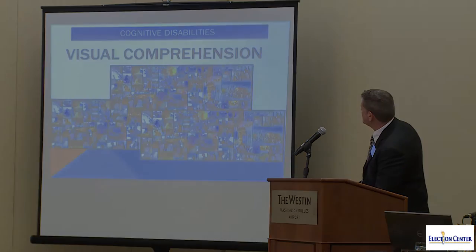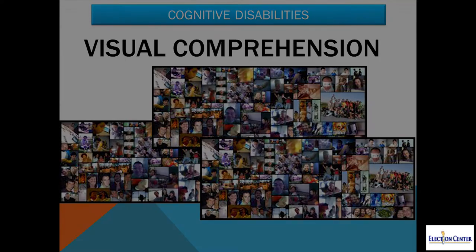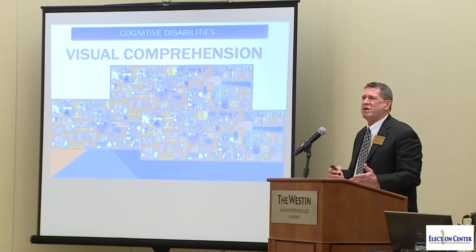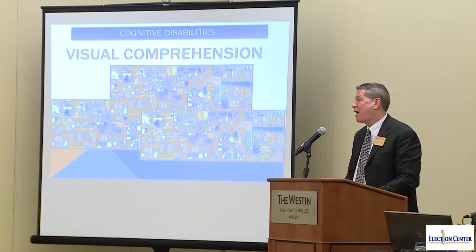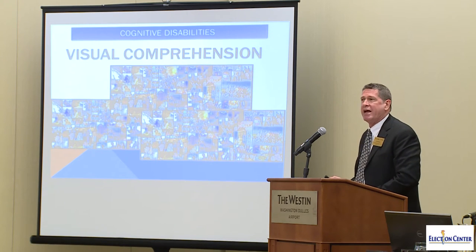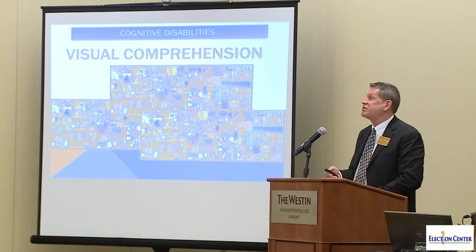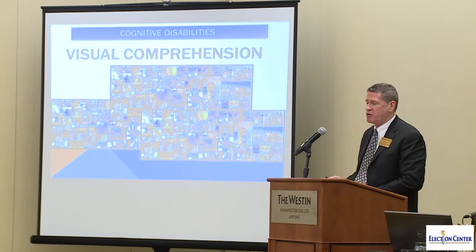Some individuals have difficulty with visual comprehension. They may look at a photograph on a web page or a diagram and recognize it as a photograph, but they might not comprehend what it is the photograph is trying to tell them. For that situation, something like a video or a person explaining it to them might be more helpful for that individual.